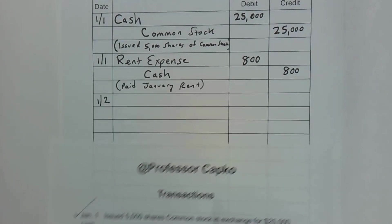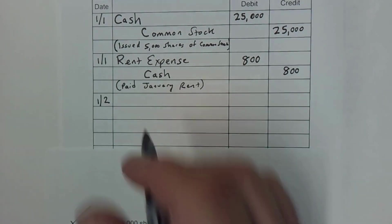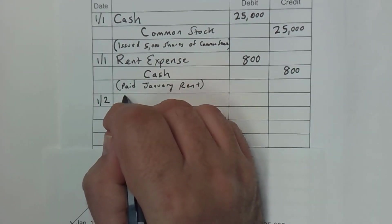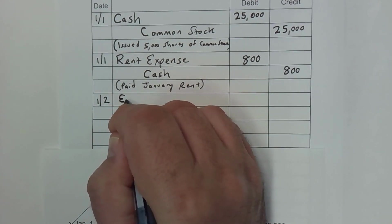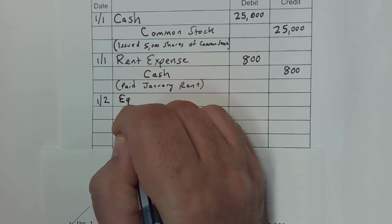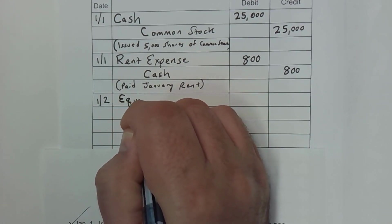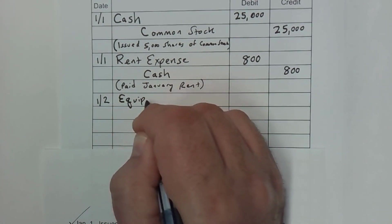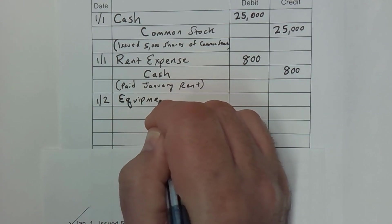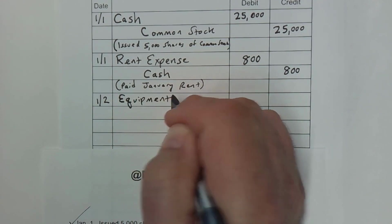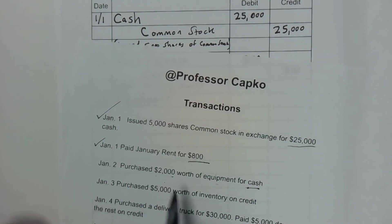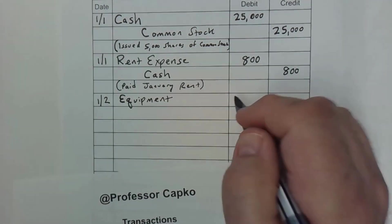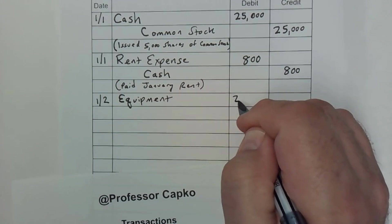Equipment is an asset and it goes up with a debit. So I'm going to go ahead and debit equipment for the price we paid — the $2,000.